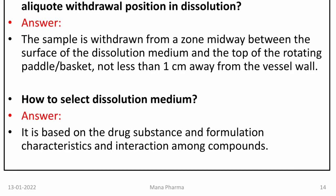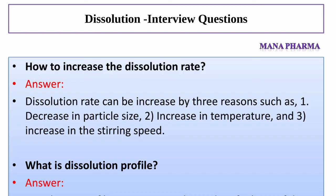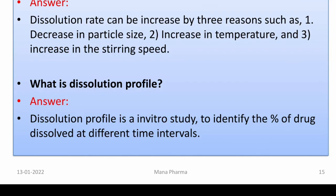How to select the dissolution medium? Answer: It is based on the drug substance and formulation characteristics and interaction among compounds. How to increase the dissolution rate? Answer: Dissolution rate can be increased by three reasons: one is decrease in particle size, second is increase in temperature, and third is increase in stirring speed. What is the dissolution profile? Answer: Dissolution profile is an in vitro study to identify the percentage of the drug dissolved at different time intervals.